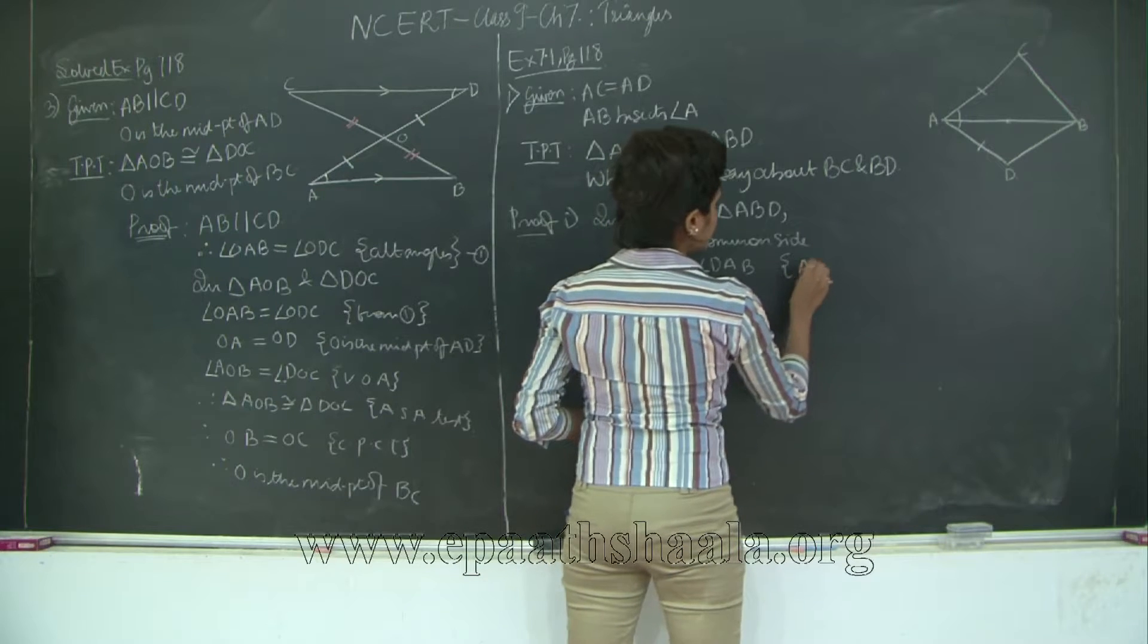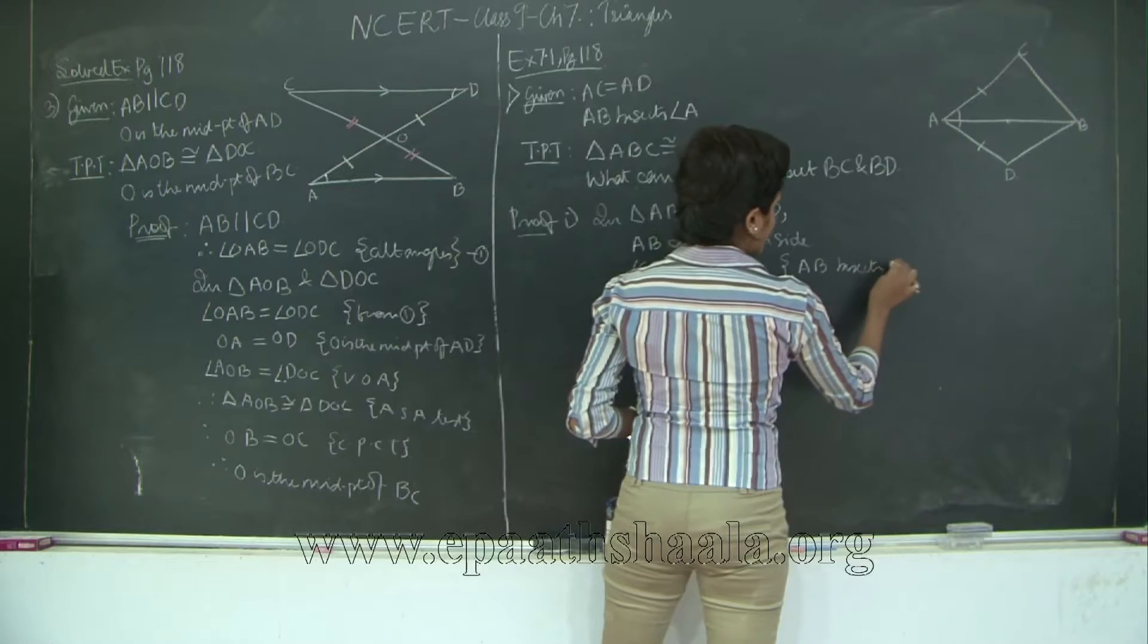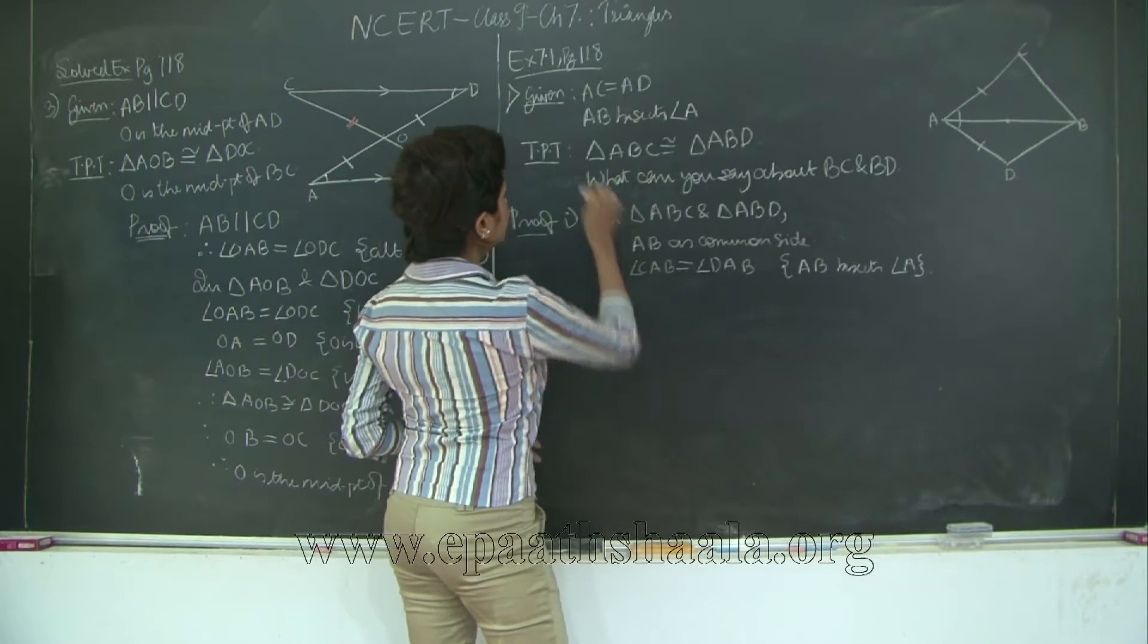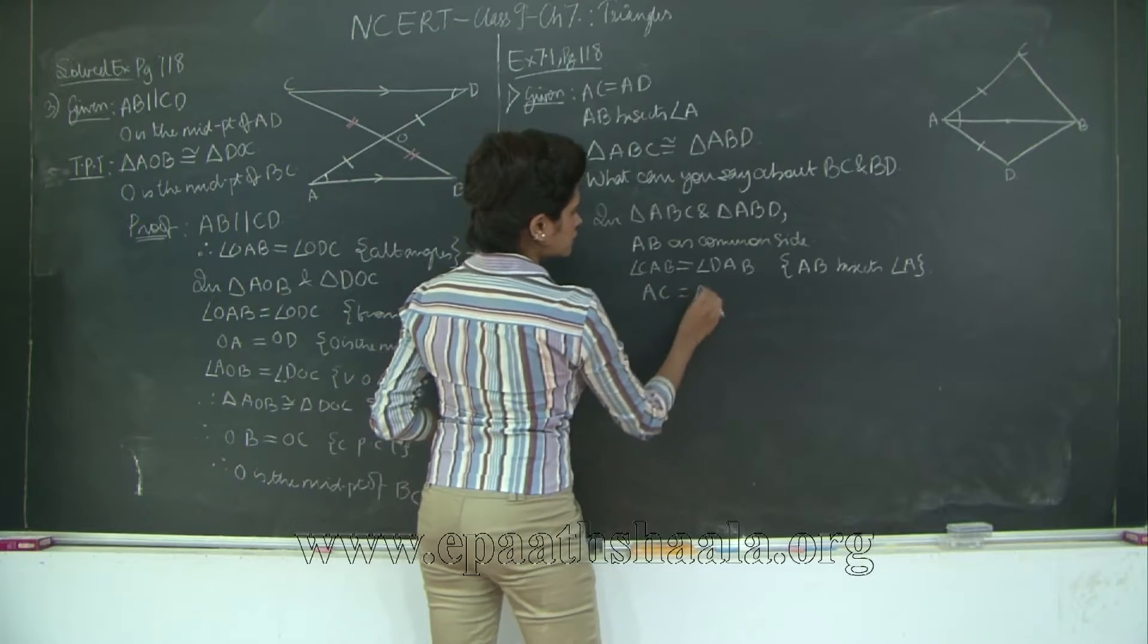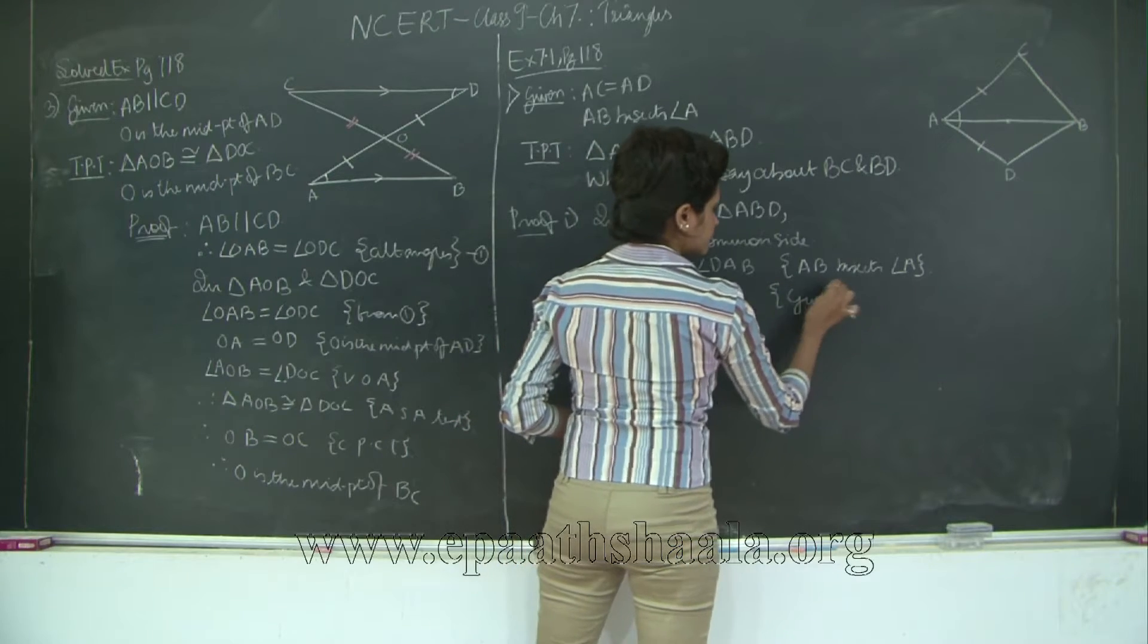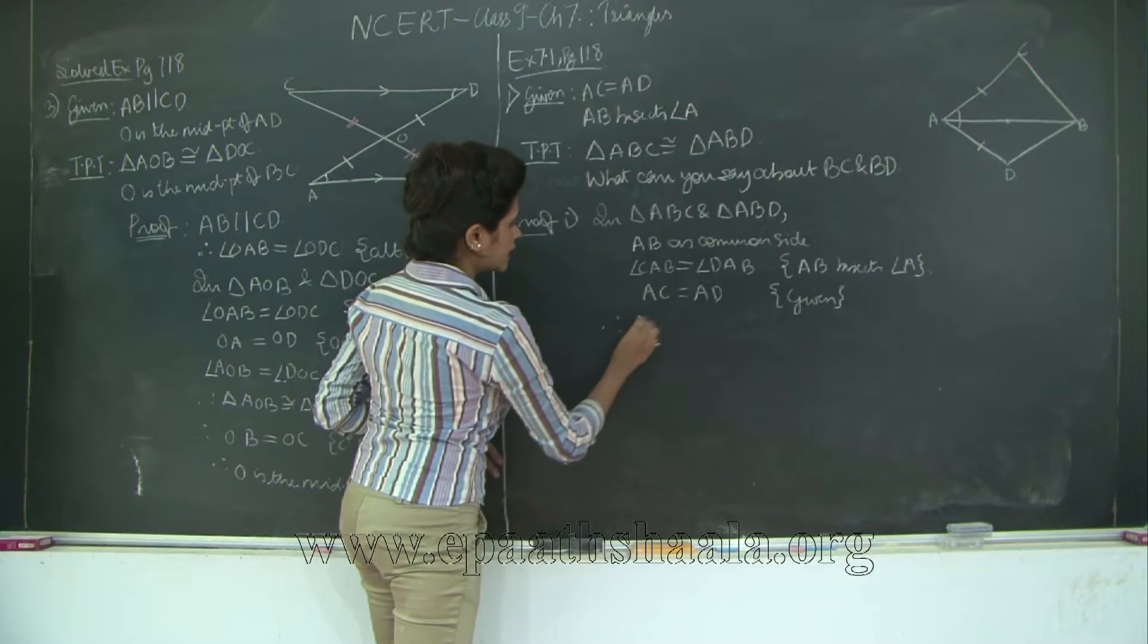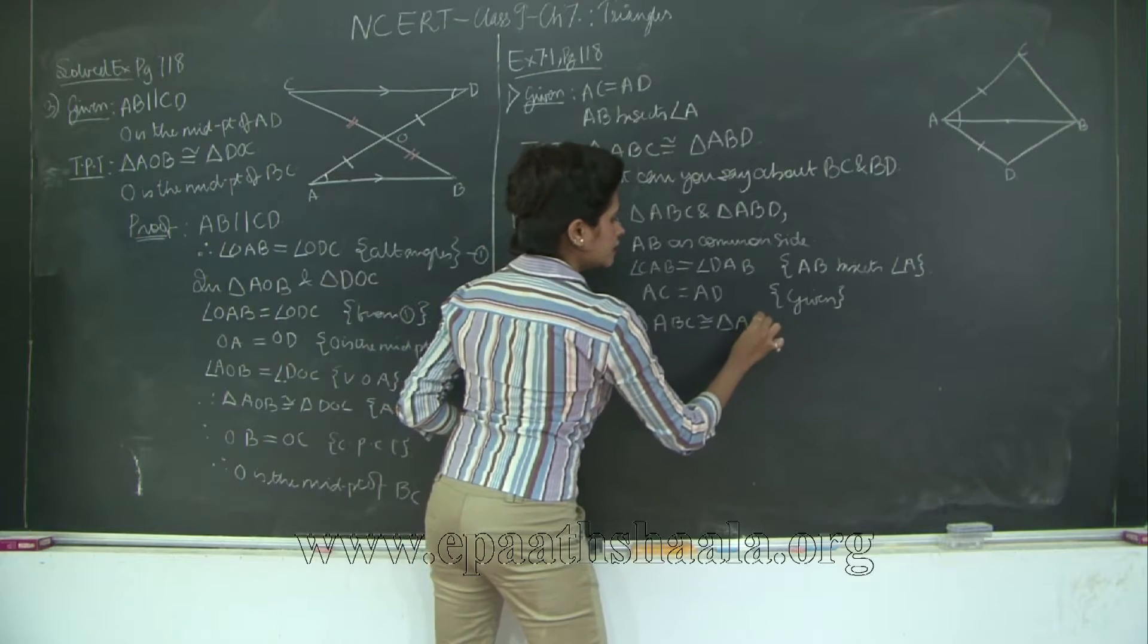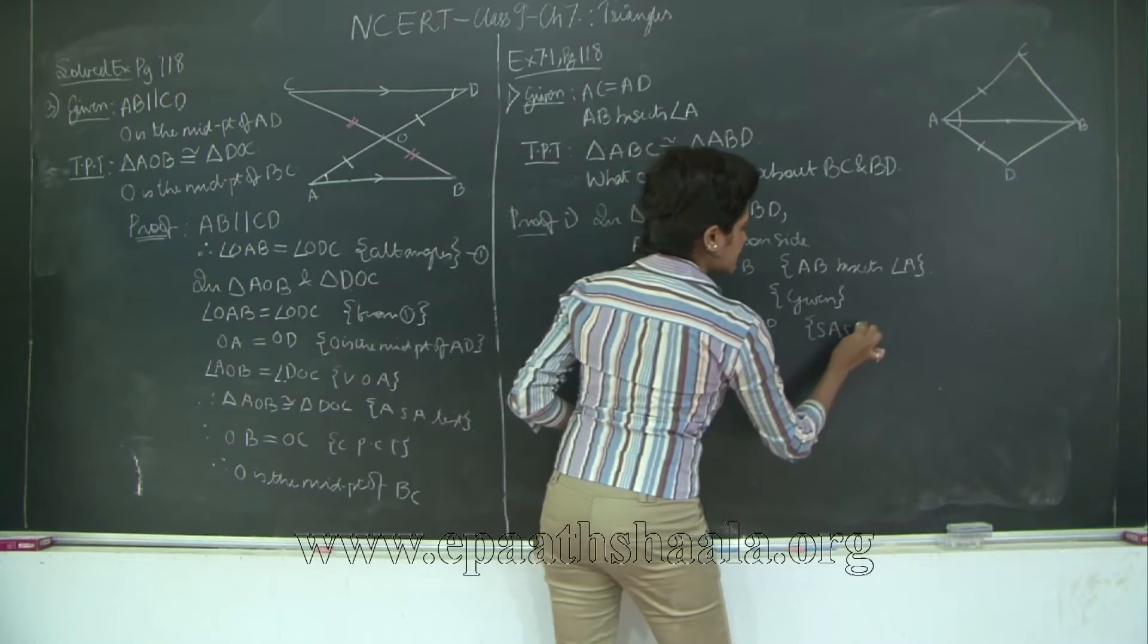AB bisects angle A, correct? and AC is equal to AD which is given.